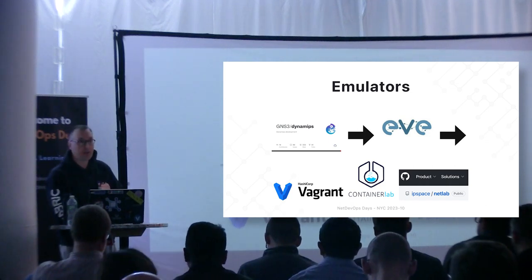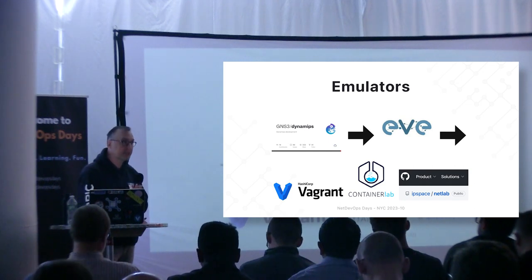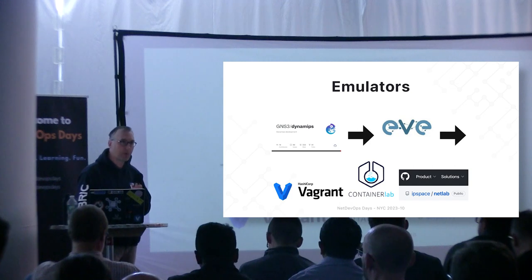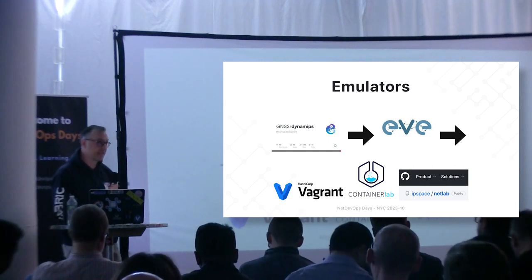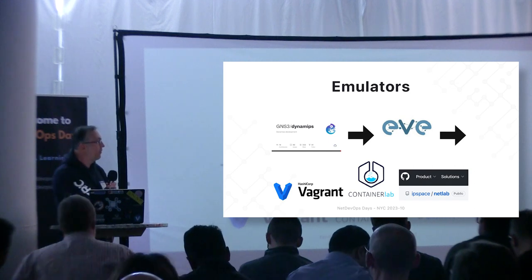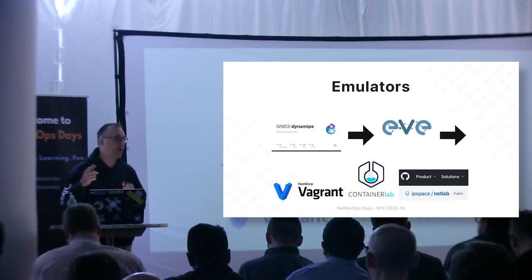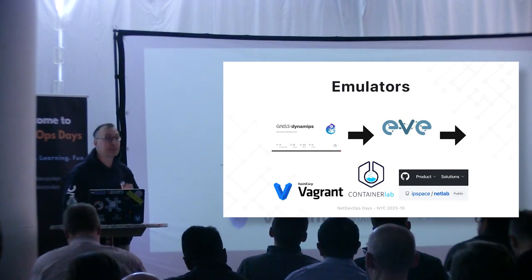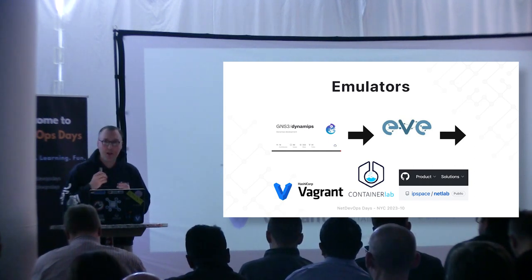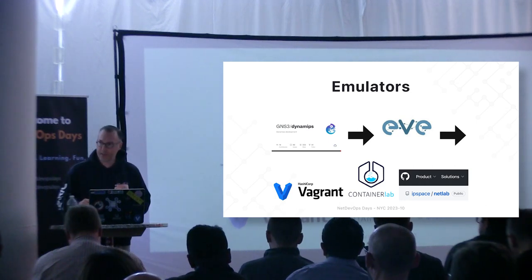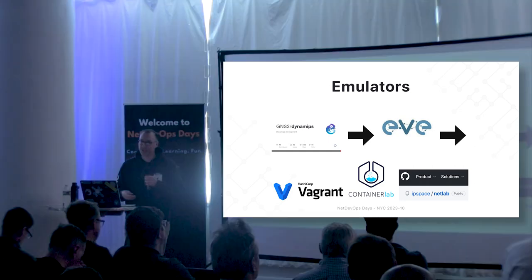That brings in a new generation of tools. One is Vagrant, which comes from the server side of the world for app development but has been extended to do network emulation and spin up vendor VMs. Then there's ContainerLab, which makes this even simpler. And there's an open source project called NetLab — think of it as an orchestrator on top of either Vagrant or ContainerLab. Its purpose is: what do you do after you've spun up the network? How do you push out configurations and make it simple to turn BGP on everywhere regardless of vendor?